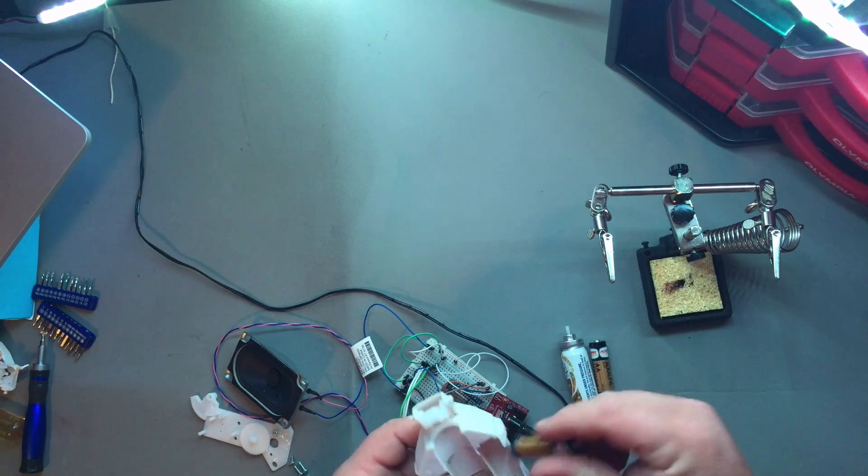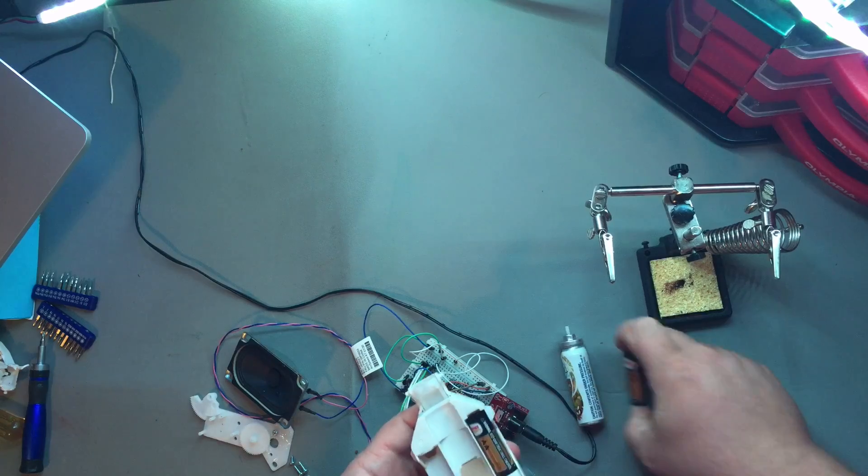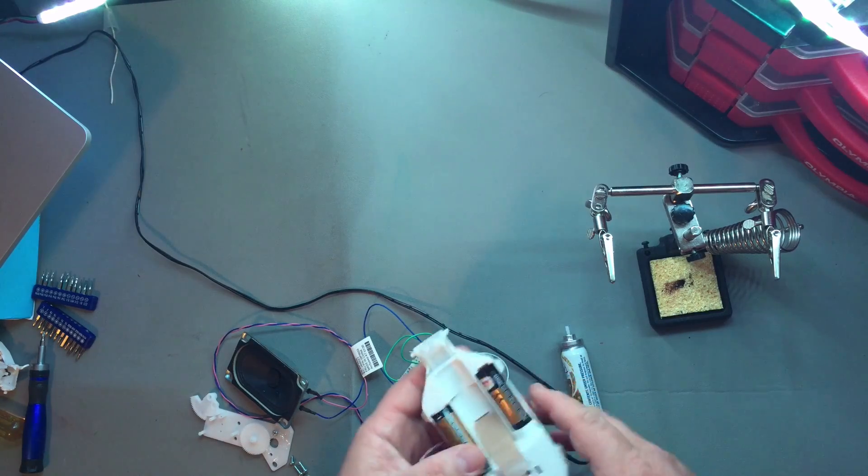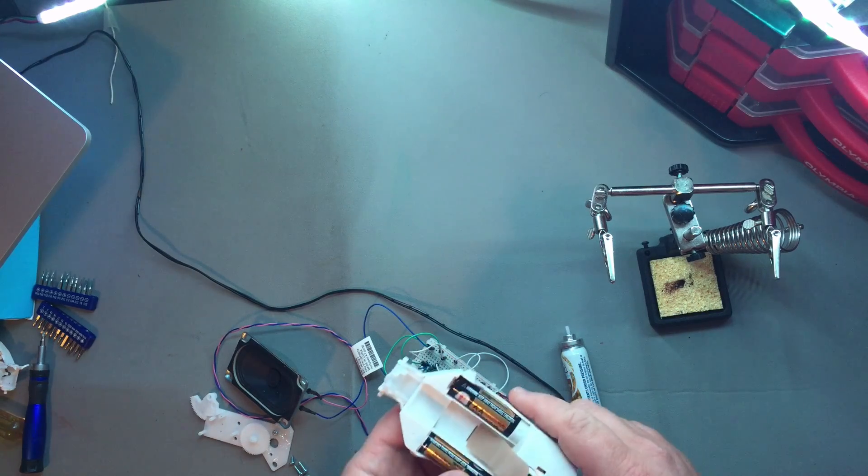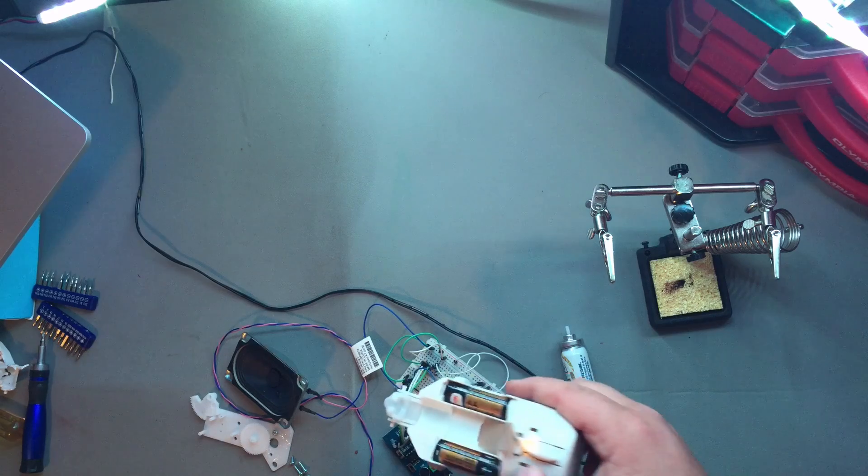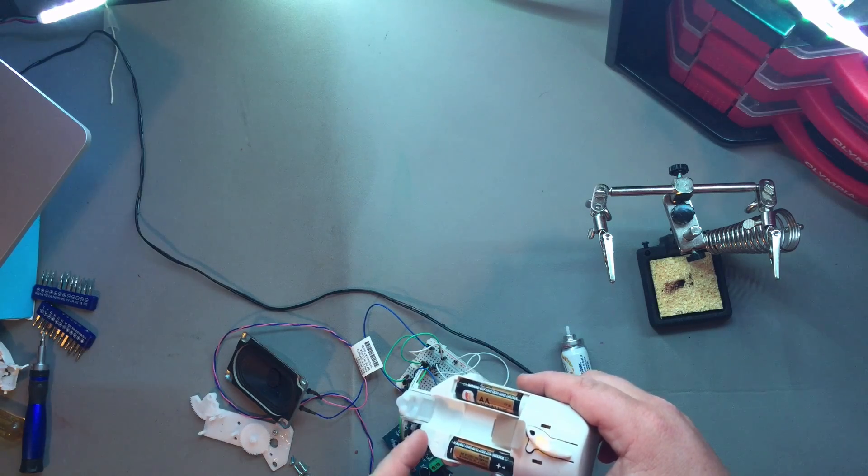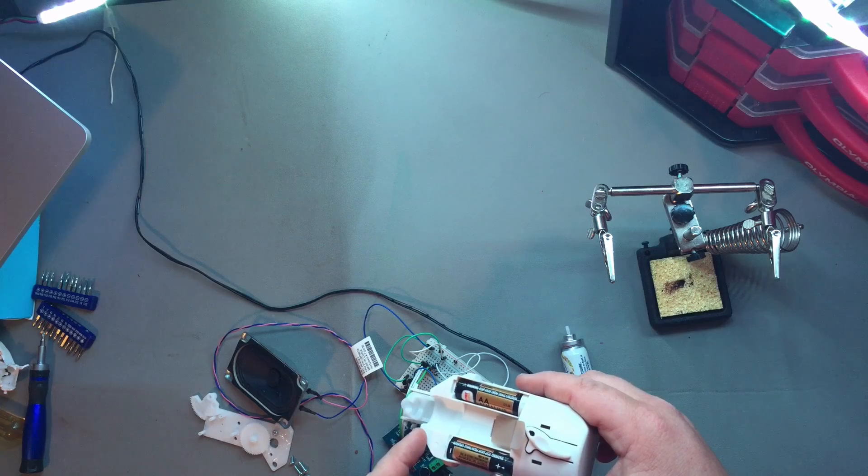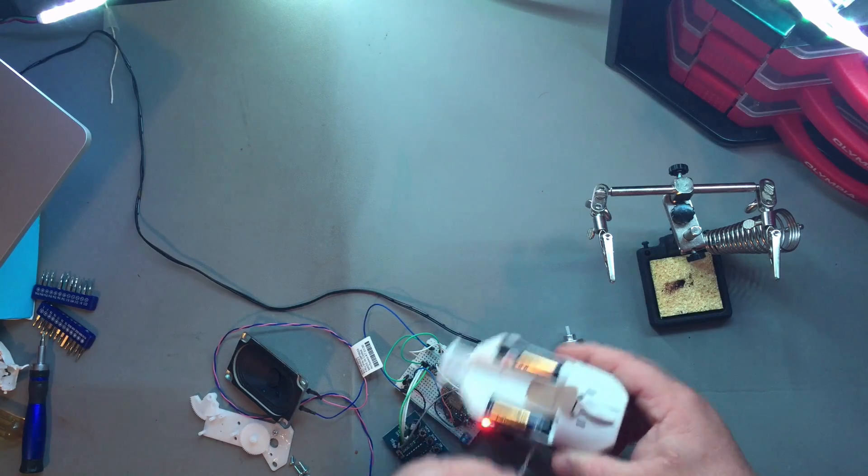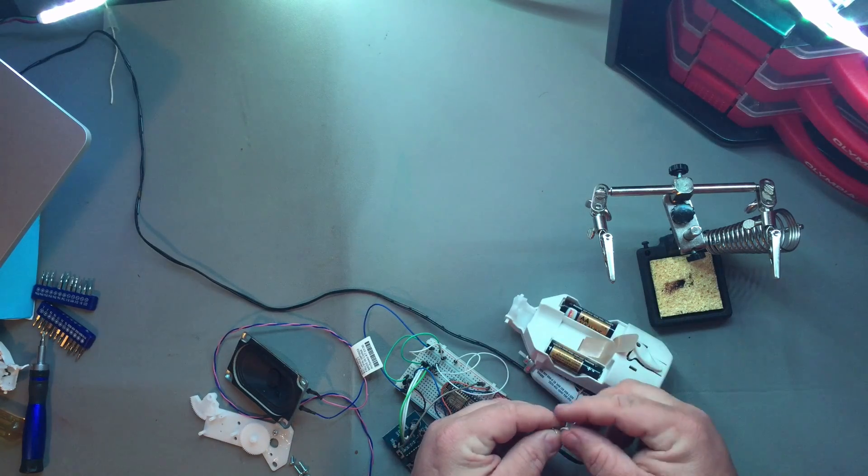So I can show you that whenever you plug in the Glade sprayer it automatically does one test fire. You'll see the LED blink and then it pulls this down, but now I can depress it anytime I want to just by crossing these wires.